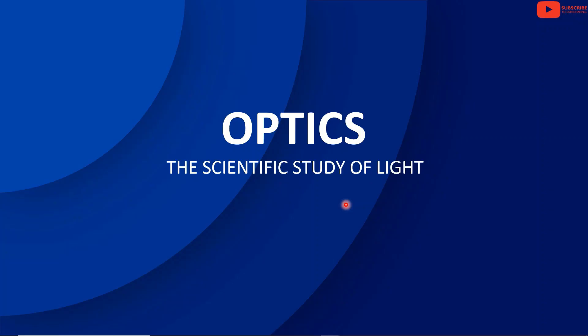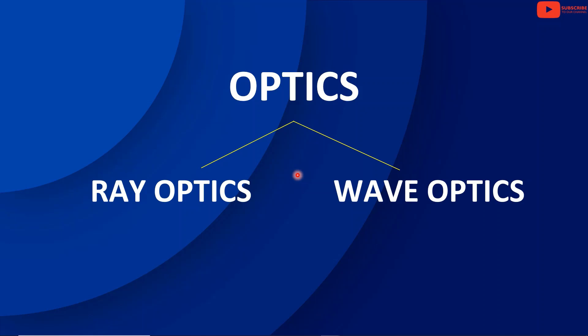Hello. I am going to discuss the principle of superposition, coherent source, interference and diffraction. What is optics? The scientific study of light is optics — that is, the branch of physics which deals with the properties of light. We will classify optics as ray optics and wave optics.